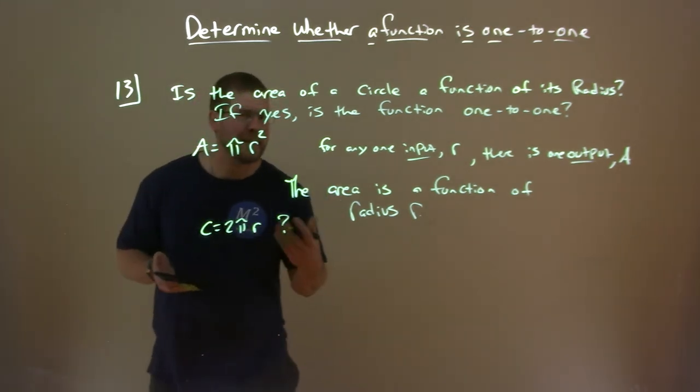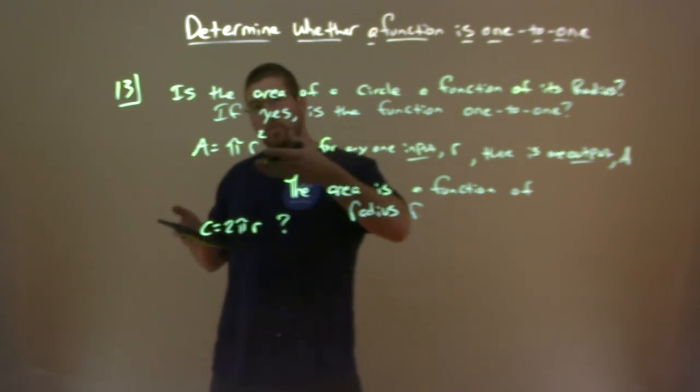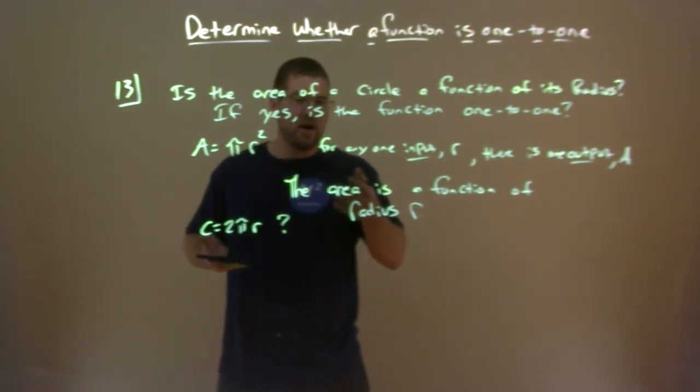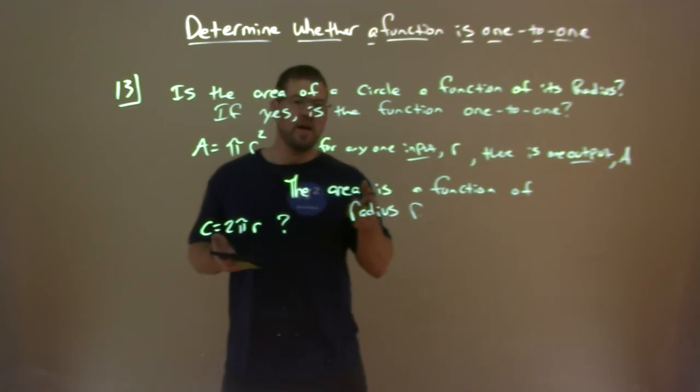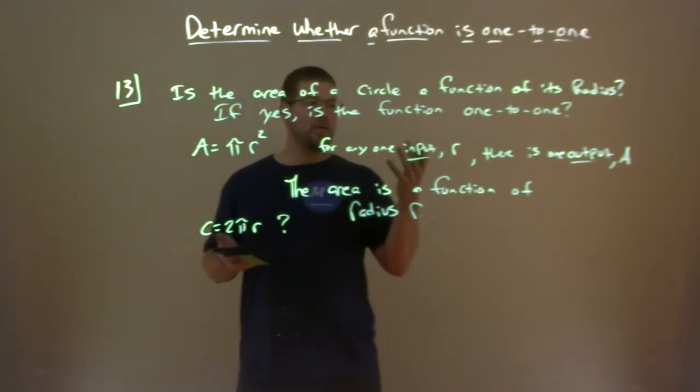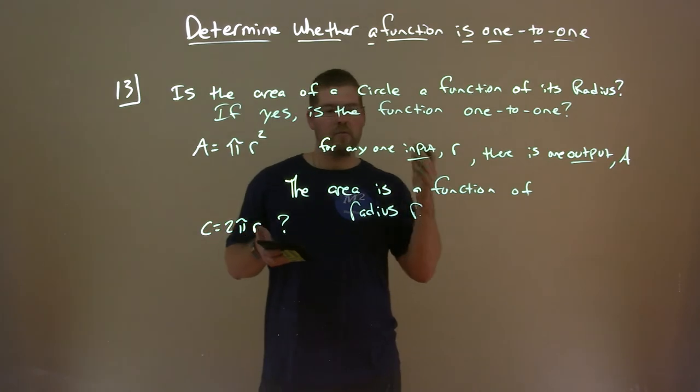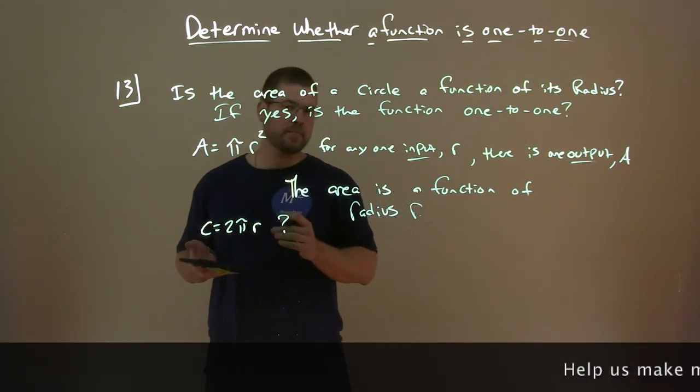Well, for every one input of radius, you have exactly one output—that's circumference. And yeah, that's also a function. For the input r radius, the circumference is a function of its radius as well.